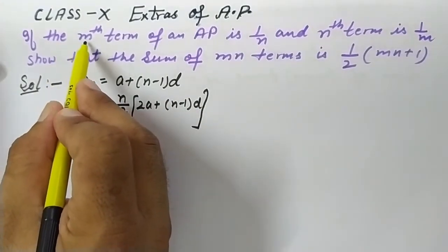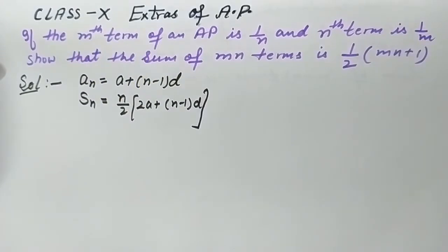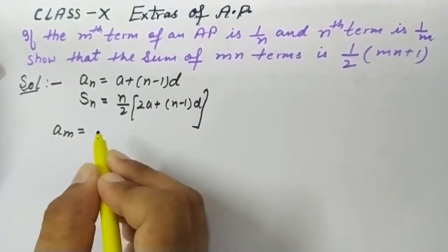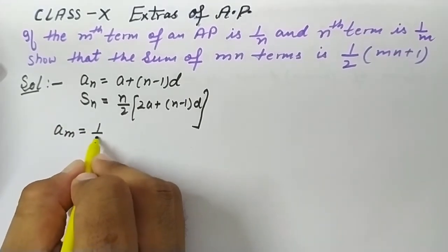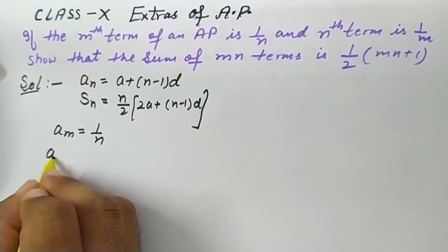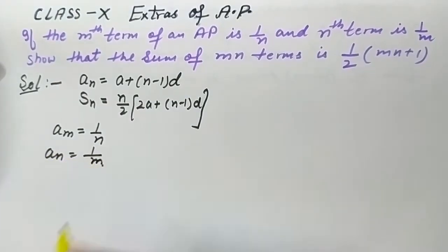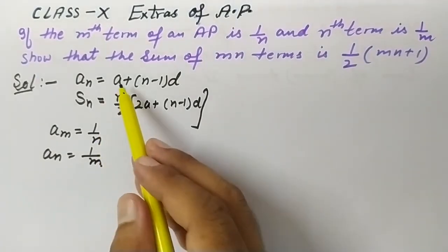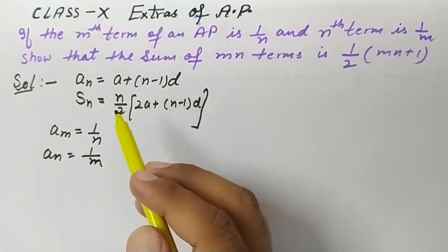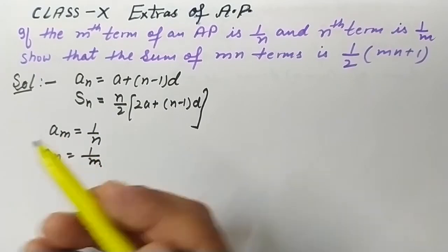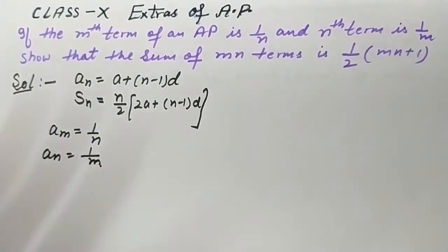What is given in the question: the mth term of an AP is 1/n, so aₘ = 1/n, and the nth term is 1/m, so aₙ = 1/m. In these types of questions, we need to find the value of 'a' and 'd'. Our main focus is to find 'a' and 'd', because once we have them, we can find anything.